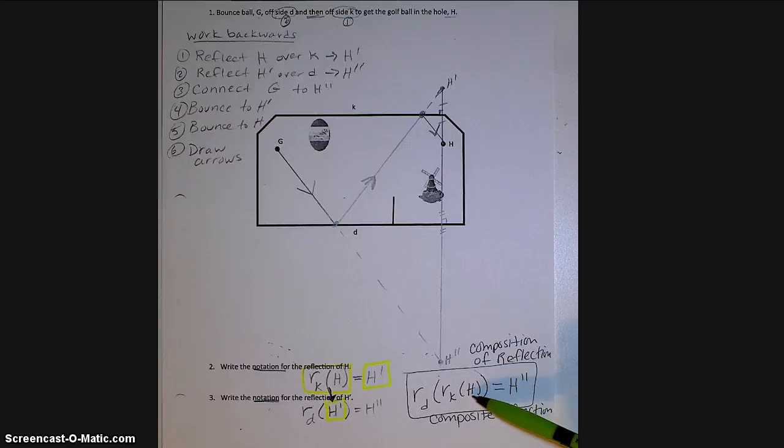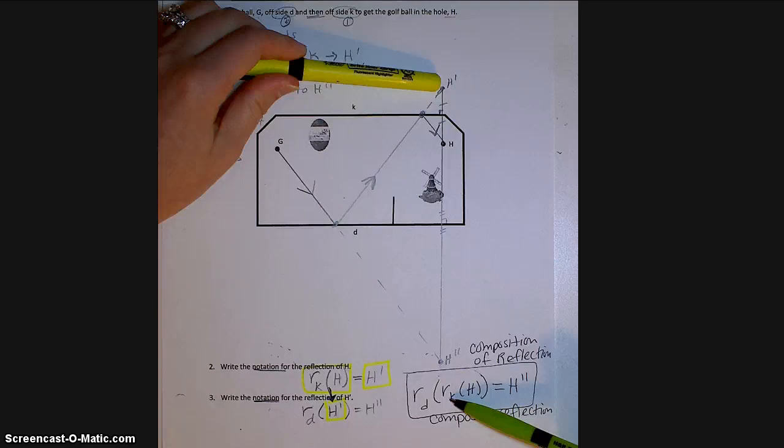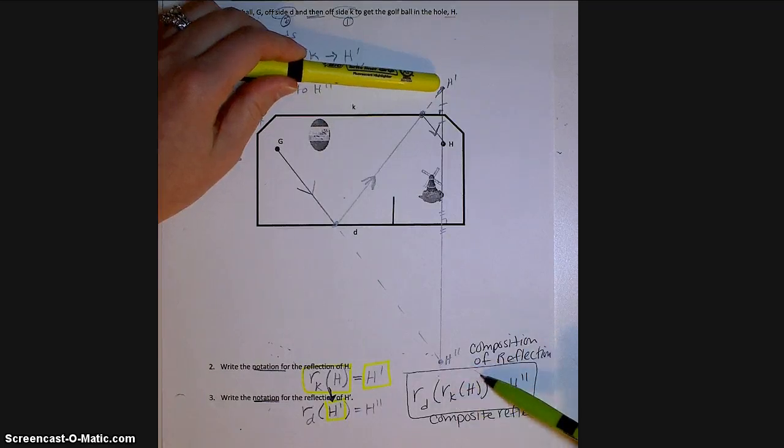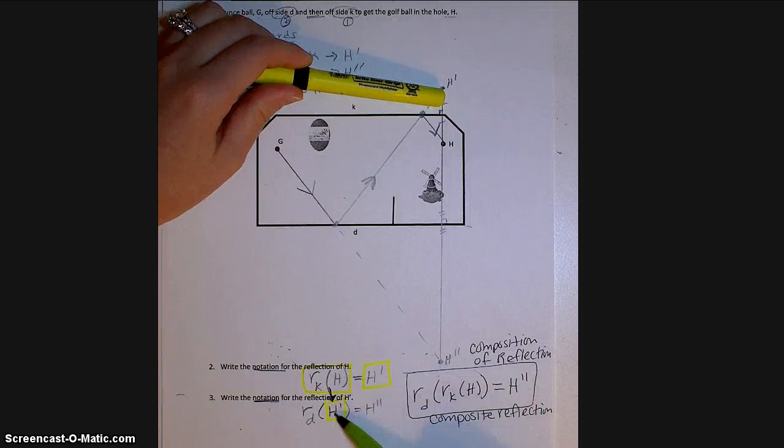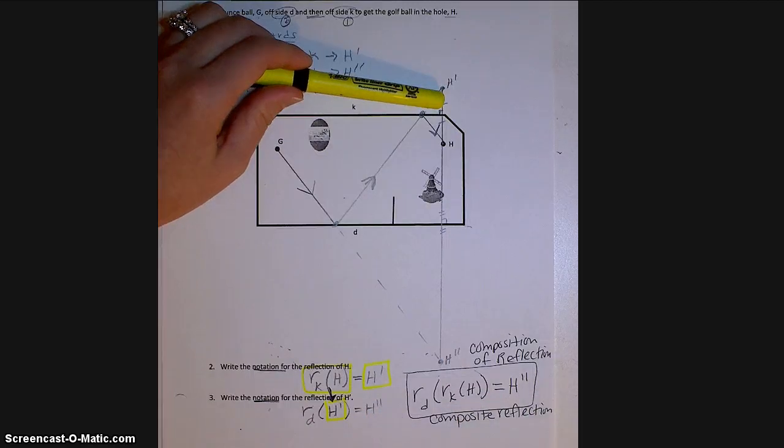The first thing we did was reflect the point H over the line K, and that's how we got H prime. Then I took that point, H prime, and reflected it over the line D, and that's how I ended up with H double prime. So this makes sense. Rather than writing two separate notations, we just write one composite notation.